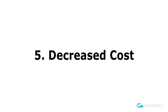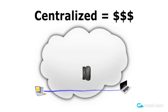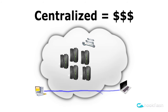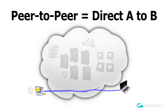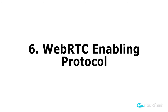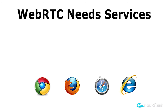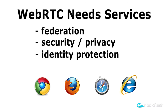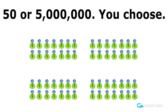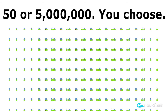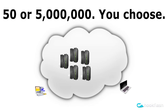Decreased cost: without the need to continuously relay signaling or media through centralized servers, the cost to host, administer, relay, replicate, process, and store data on these servers while providing five-nines of uptime is decreased substantially. WebRTC enabling protocol: designed to be the engine that allows WebRTC to function, supporting federation of services, security, identity protection, and peer-to-peer signaling. Scalability: whether starting at 50 users or moving beyond 5 million users, the protocol is designed to allow for easy scalability by removing the complexity of communications out of the servers.